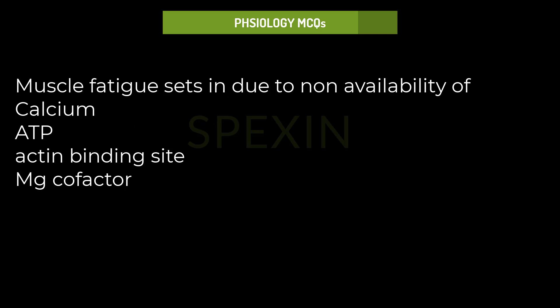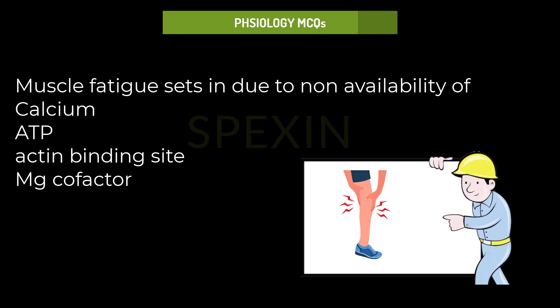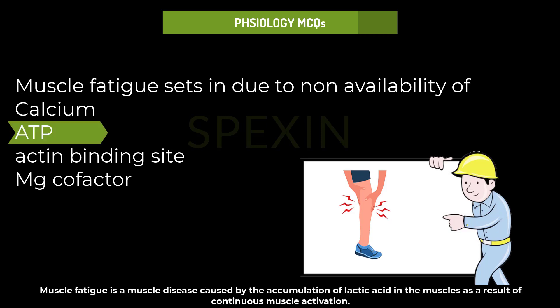Muscle fatigue sets in due to non-availability of: calcium, ADP, actin binding site, or Mg cofactor? Muscle fatigue sets in due to non-availability of ADP. Muscle fatigue is a condition caused by the accumulation of lactic acid in the muscles as a result of continuous muscle activation.